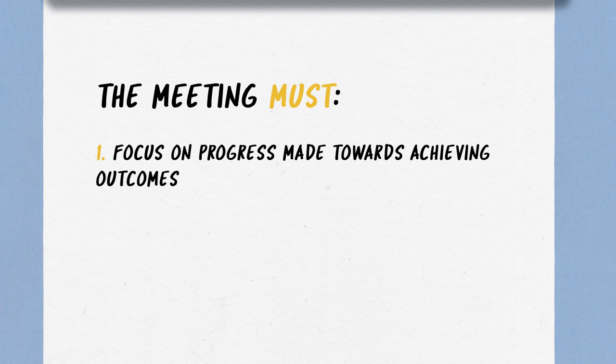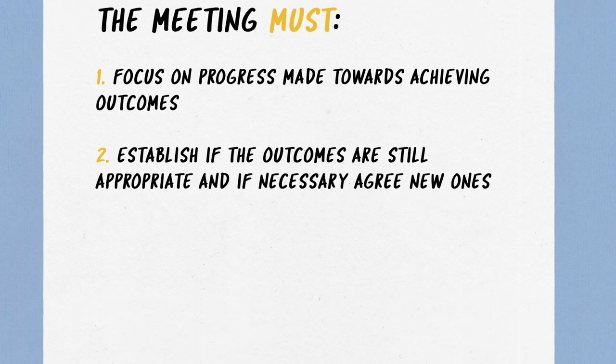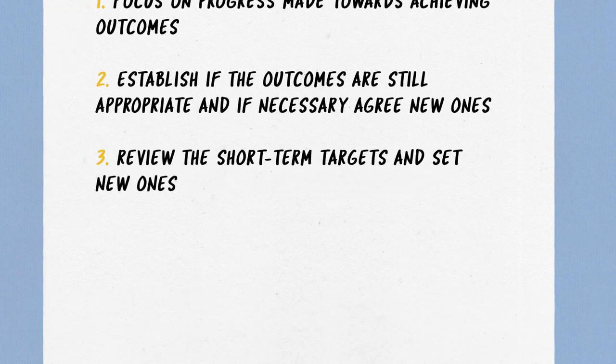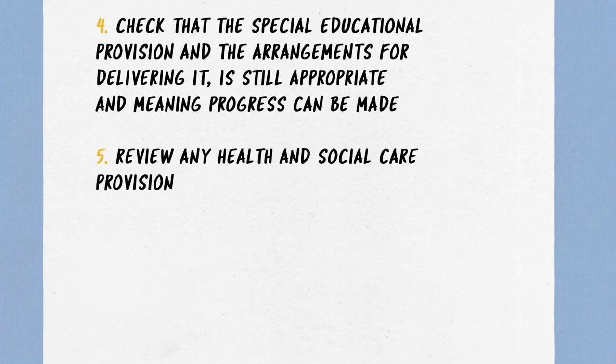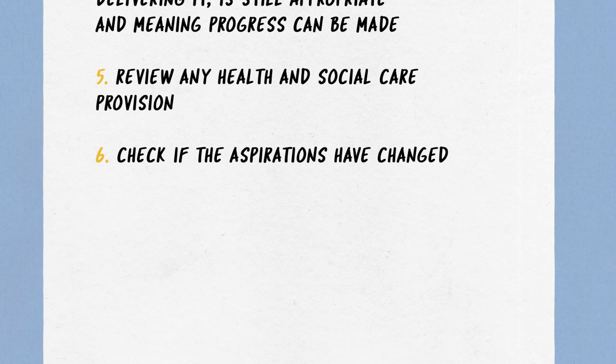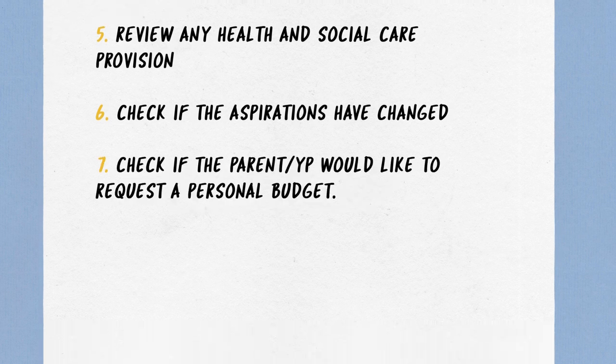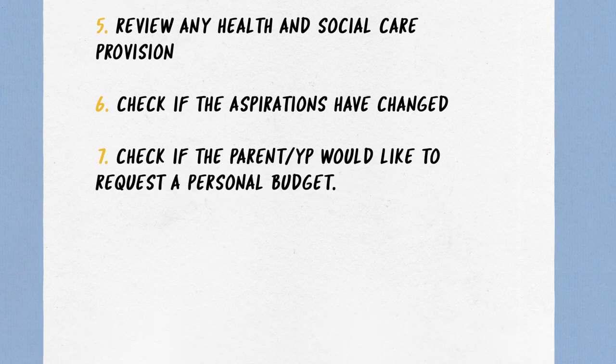It must focus on: progress made towards achieving outcomes; establish if the outcomes are still appropriate and if necessary agree new ones; review the short-term targets and set new ones; check that the special educational provision and the arrangements for delivering it are still appropriate and that progress can be made; review any health and social care provision; check if the aspirations have changed; and check if the parent or young person would like to request a personal budget.